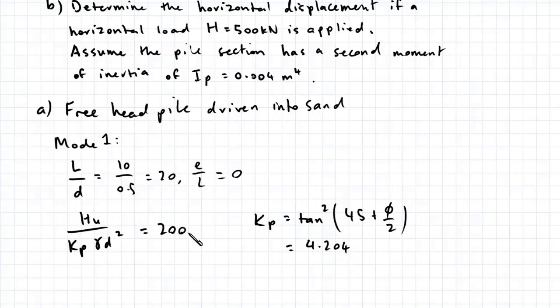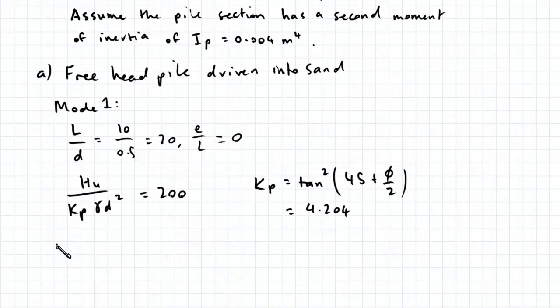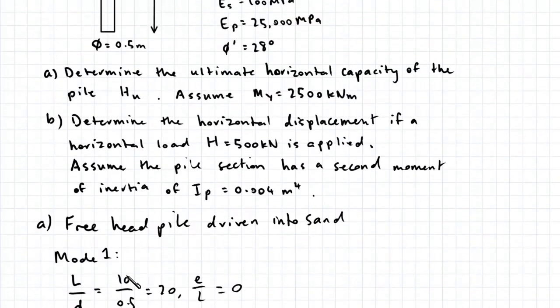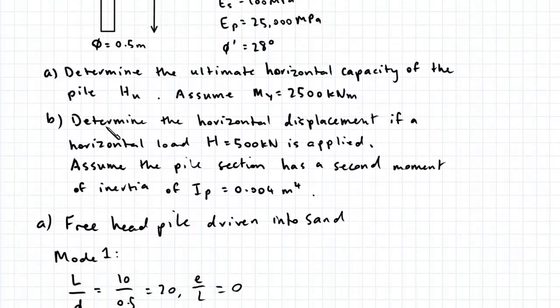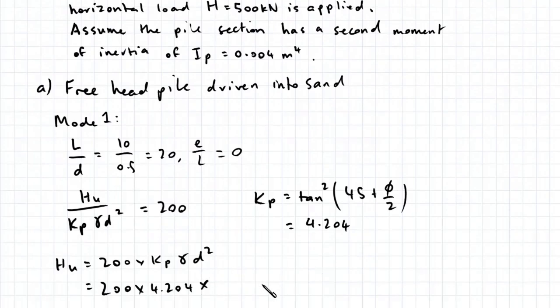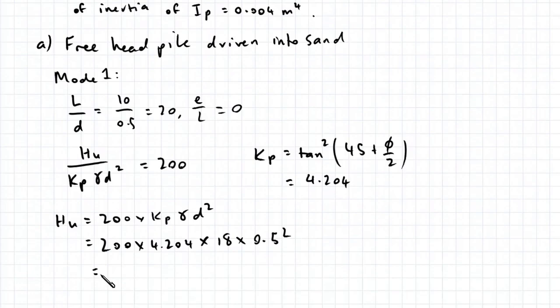Now we can multiply these terms to the other side. HU is equal to 200 times KP gamma D squared. That's 200 times 4.204 times our unit weight, which is 18, times our diameter squared, which is 0.5. This works out to be 1891.8 kN.